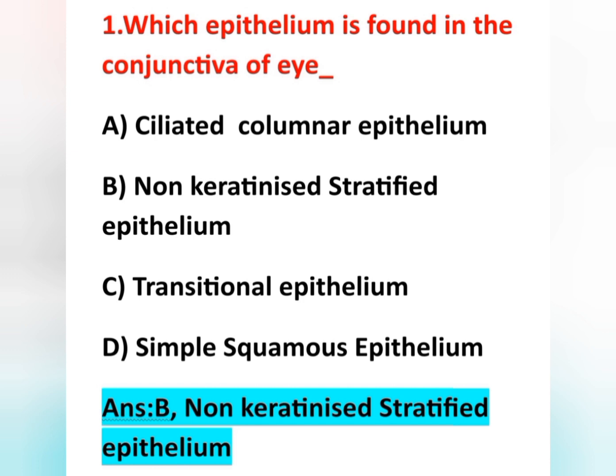The conjunctiva of the eye is lined by non-keratinized stratified epithelium. Ciliated columnar epithelium lines the uterus, fallopian tube, eustachian tube, middle ear, nasal cavity, nasopharynx, and pharynx.